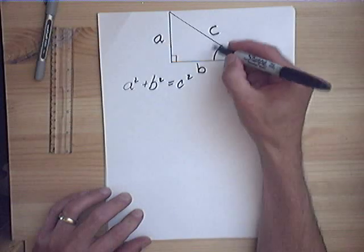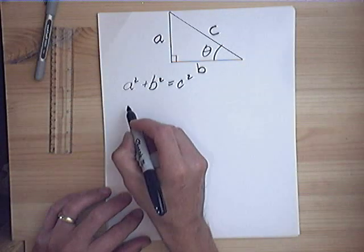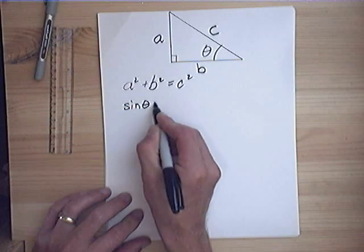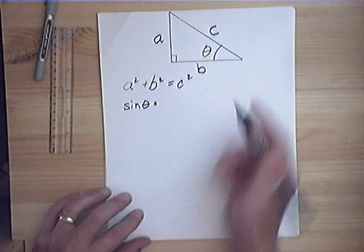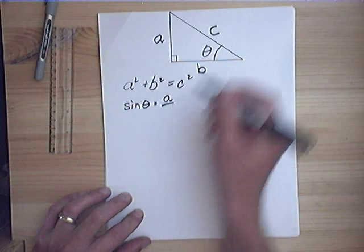I'm going to label this angle theta. Let's do some trig identity. So the sine of theta is defined as the opposite side over the hypotenuse.